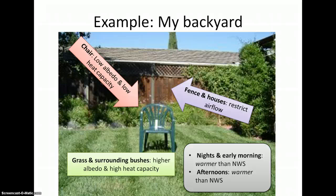In the late afternoon, it would be warmer as well because of the chair heating up and the restricted air flow. However, the temperature will not be much higher than the Weather Service. If I had a lot more vegetation or it was located in the shade, it might even be a little cooler than the Weather Service reading, again because of the vegetation. The restricted air flow and low heat capacity, low albedo materials overall create a heat island effect in my backyard.